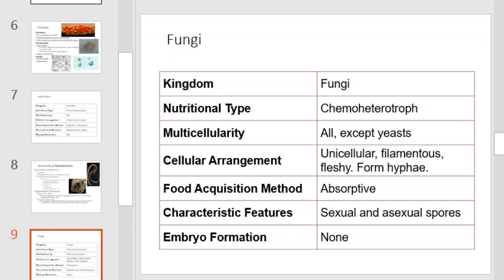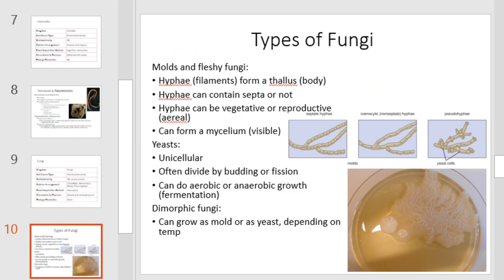The fungi belong to kingdom Fungi. They are chemoheterotrophic and multicellular — all except for yeast. Their cellular arrangement might be unicellular, filamentous, or fleshy, and they form hyphae. They absorb their food and can reproduce sexually and asexually using spores. None of them form embryos. The molds and fleshy fungi all use hyphae or filaments to form the thallus or body. The hyphae can contain septa or sometimes not, and can be vegetative or reproductive, forming a visible mycelium. Yeast are unicellular, often divide by budding or fission, and can do aerobic or anaerobic growth, known as fermentation.